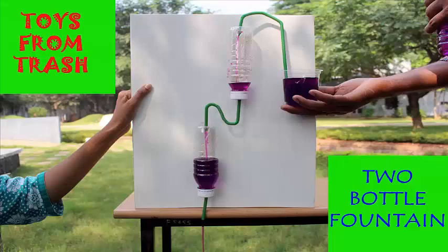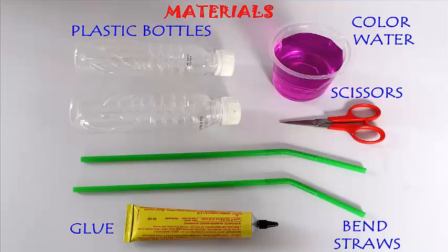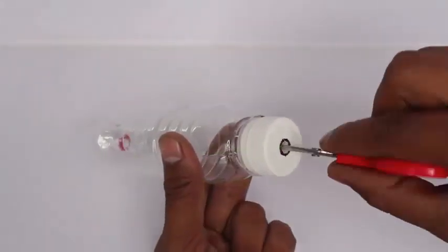In this craft room, we will create a fountain. For this, you should have two small bottles, two bend straws, and a little bit of glue and colored water.